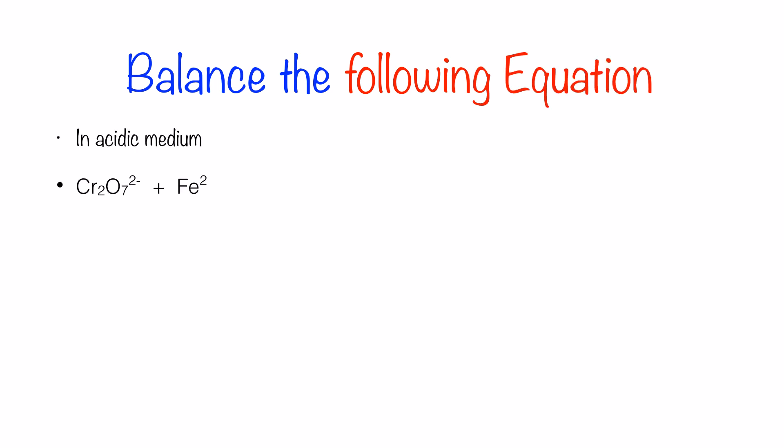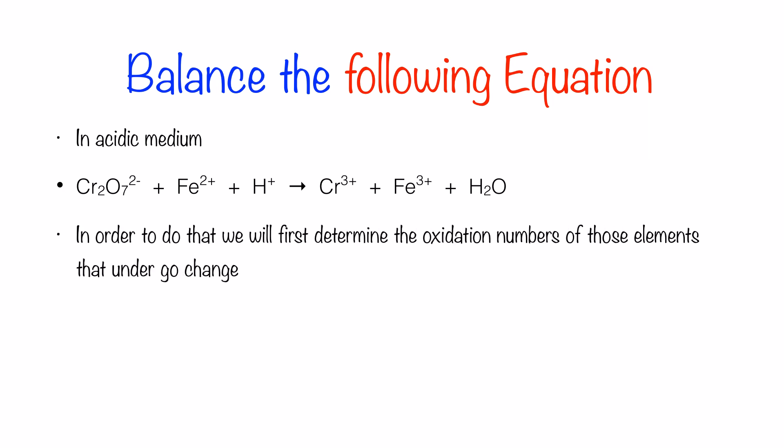We are going to balance the following equation in acidic medium: Cr₂O₇²⁻ plus Fe²⁺ plus H⁺ gives Cr³⁺ plus Fe³⁺ plus H₂O. In order to do that, we will first determine the oxidation numbers of those elements undergoing a change.